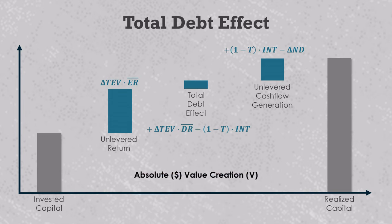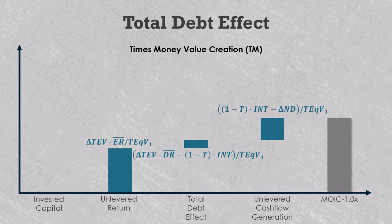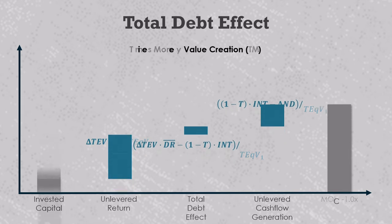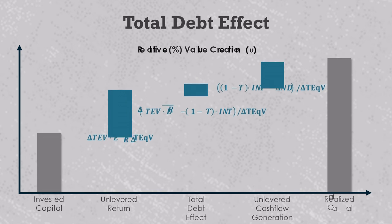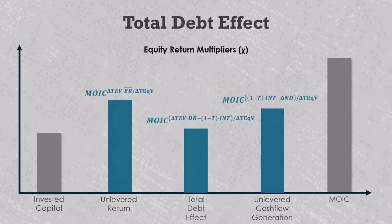Here the value drivers are all measured in dollars or absolute value creation. We can divide everything on the chart by invested capital — or TEV1 — to get the times money value drivers that were introduced in VC103. Here all the value drivers add up to the deal's total equity multiple of invested capital minus one. Alternatively, we can divide absolute value creation measurements by the total equity value creation, or delta TEV, to get relative value creation. In this domain, all the value drivers always add up to 100%. Then we can take the deal's gross multiple of invested capital and raise it to the power of relative value creation to get the equity return multipliers.